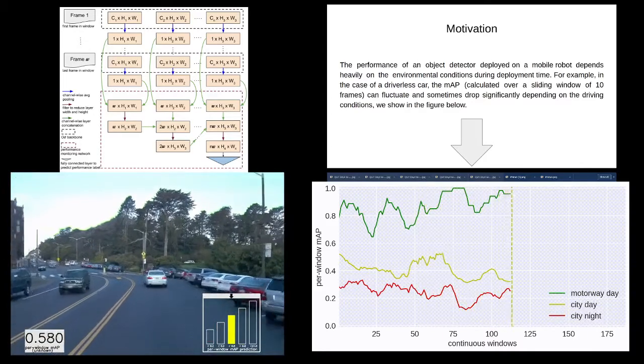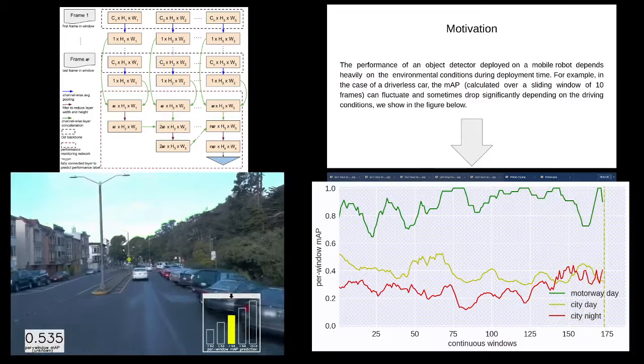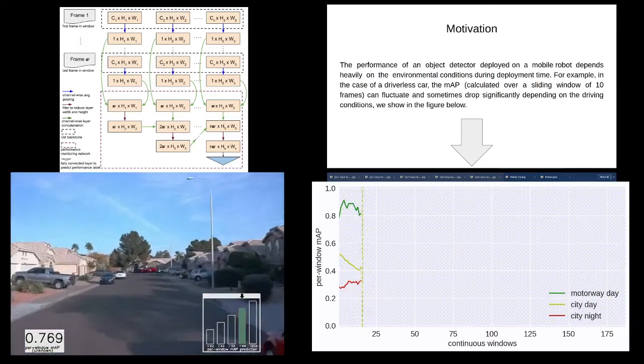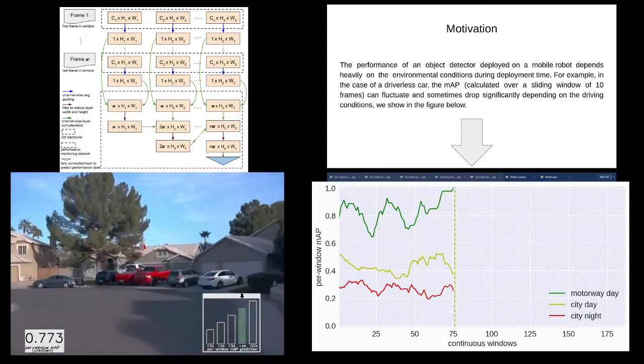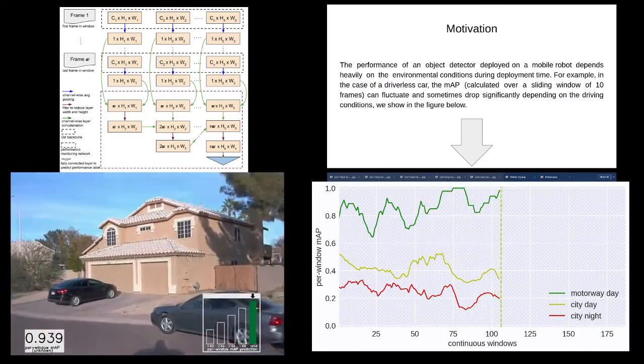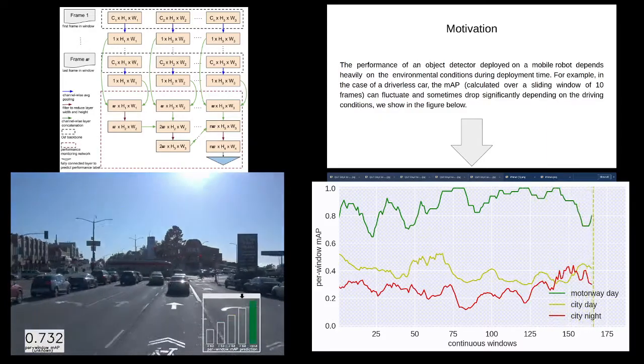The figure in the bottom right corner shows an example of this MAP in multiple scenarios. Here the MAP is calculated for a sliding window of 10 frames at a time for each scene separately instead of the whole dataset at once. Even for a single scene, we can see that MAP varies significantly over time and place.